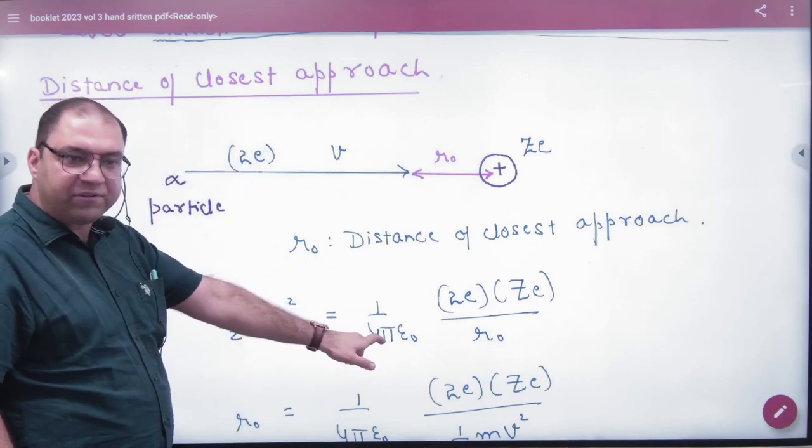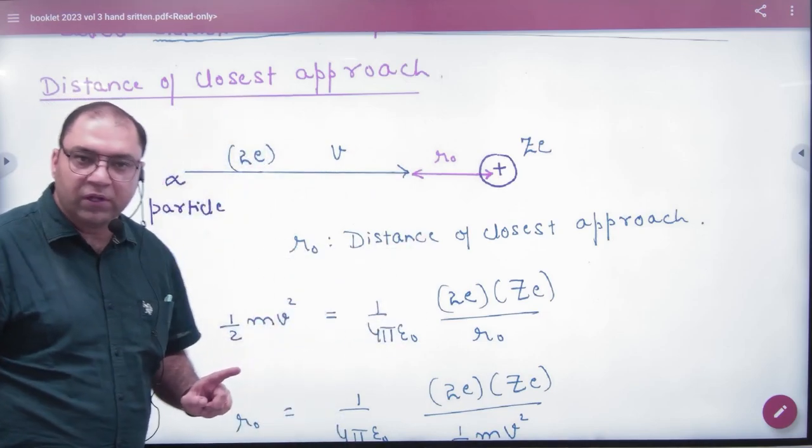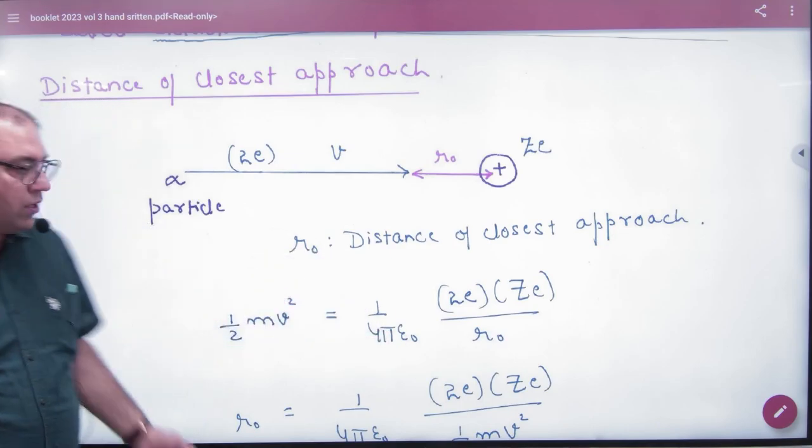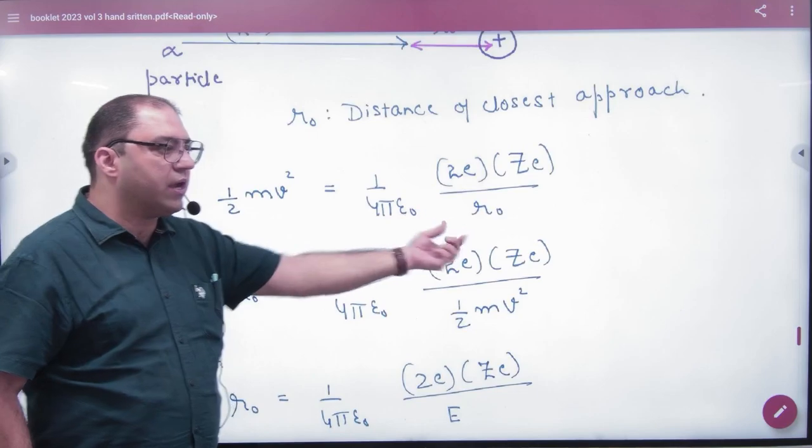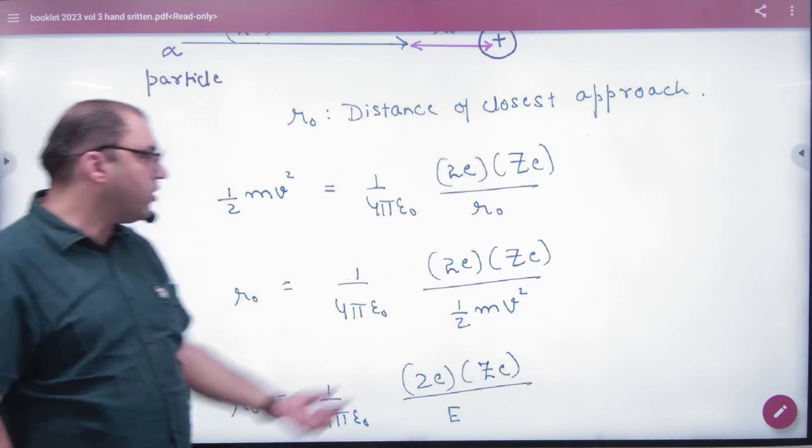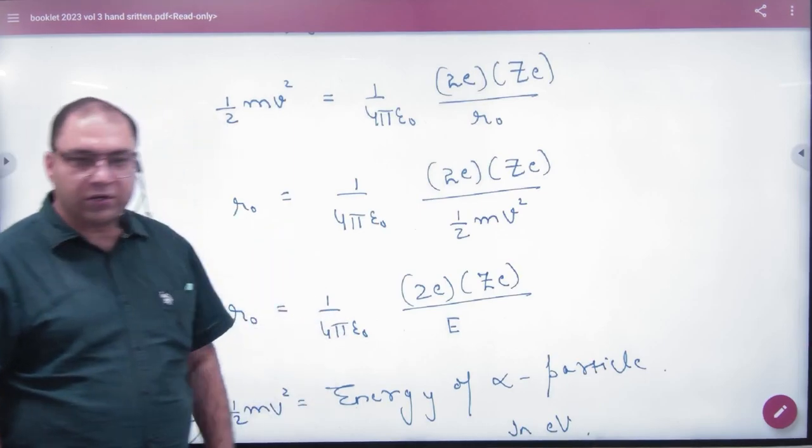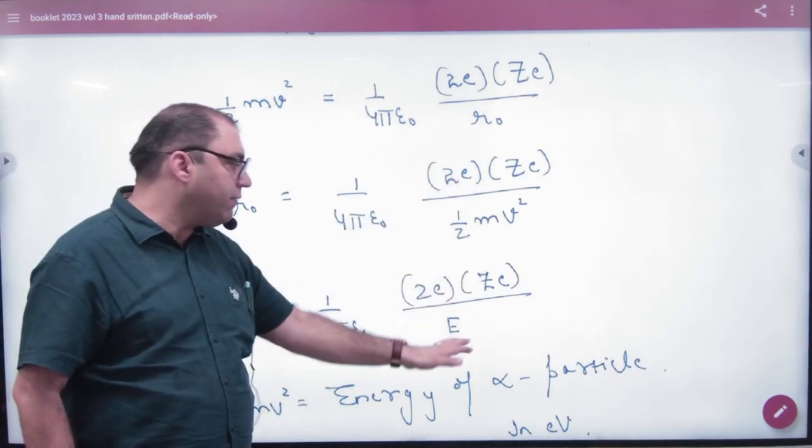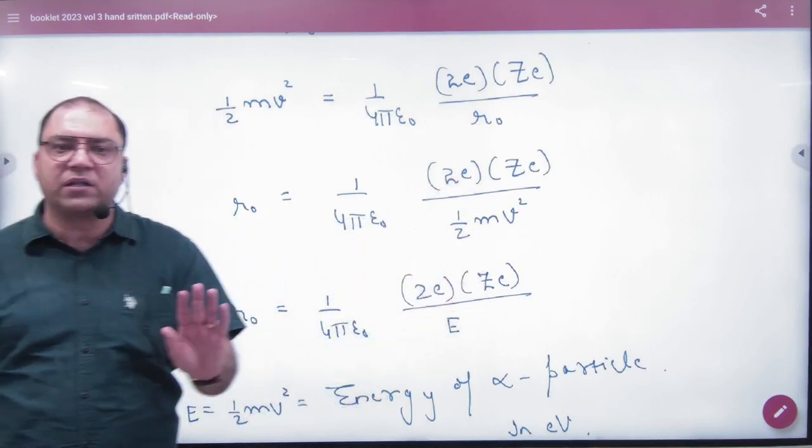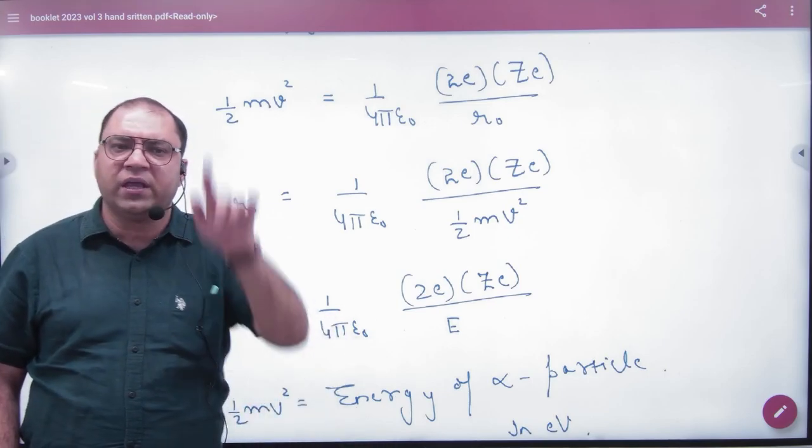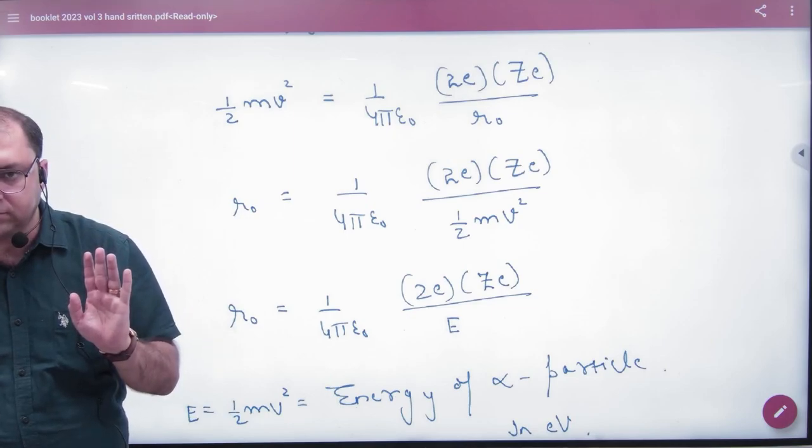1 by 4 pi epsilon naught, q1 q2 by r. q1 into q2 by r. Kinetic energy of alpha particle E.